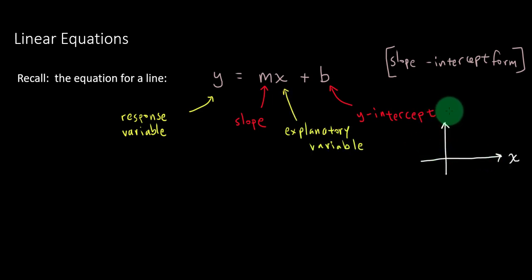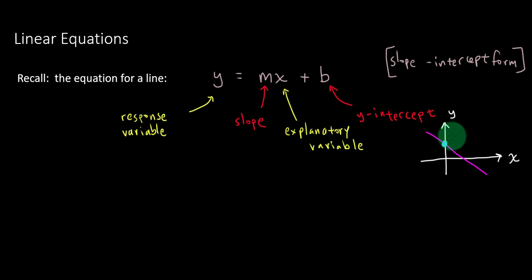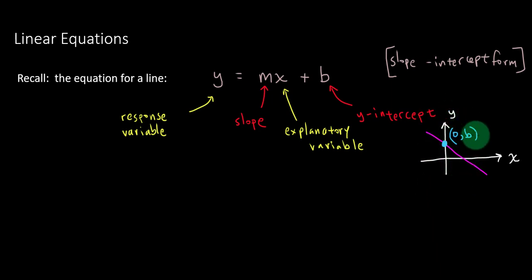Another note about the y-intercept: when we say y-intercept, we're talking about lines. Here I've got an example of a line in pink. The y-intercept would be the location of this point in blue because it intersects the y-axis. So the coordinate here would be (0, b), because if a point lies on the y-axis, its x-coordinate must be 0.